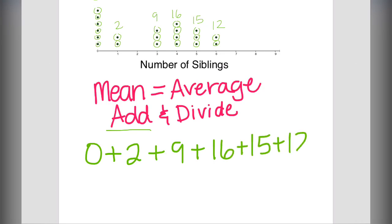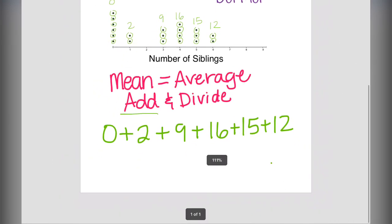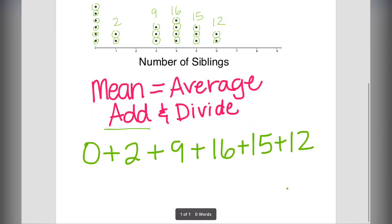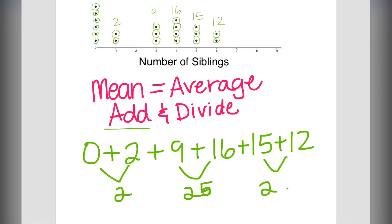Down here I'm doing a little bit of grouping which makes addition a little bit faster but you can do it completely vertically one number at a time. I'm just going to group zero and two together, nine and sixteen together, fifteen and twelve together and then group again, two with twenty-five plus the twenty-seven gives me fifty-four.